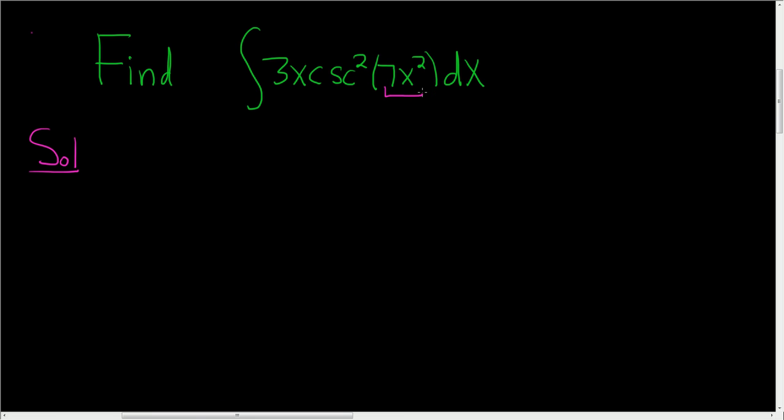If we set u equal to 7x squared, then du is going to be 14x dx. We do have an x here, so we can manipulate that to finish our substitution.